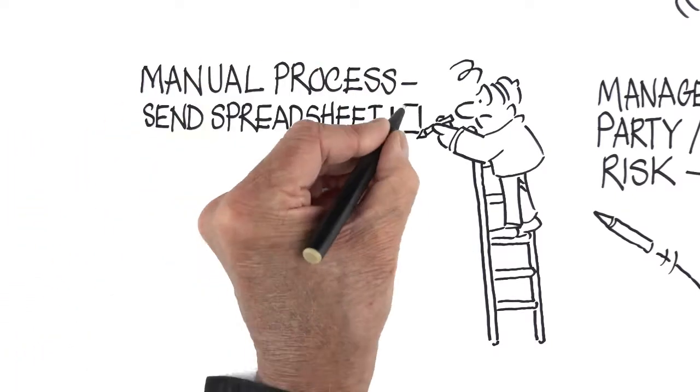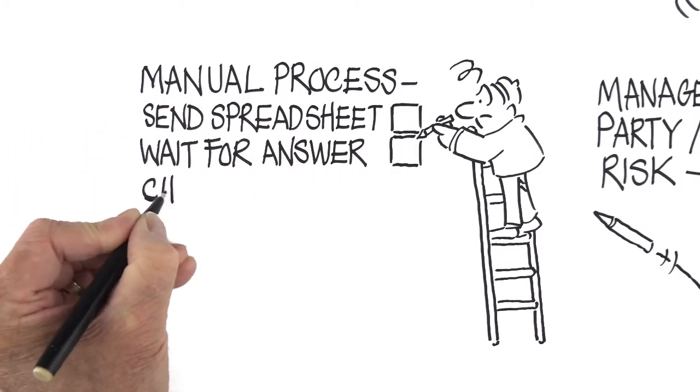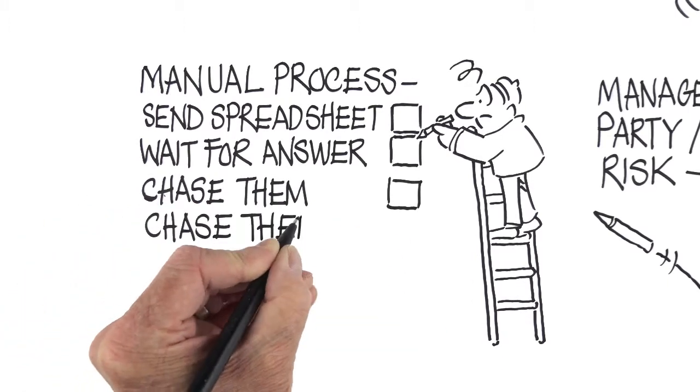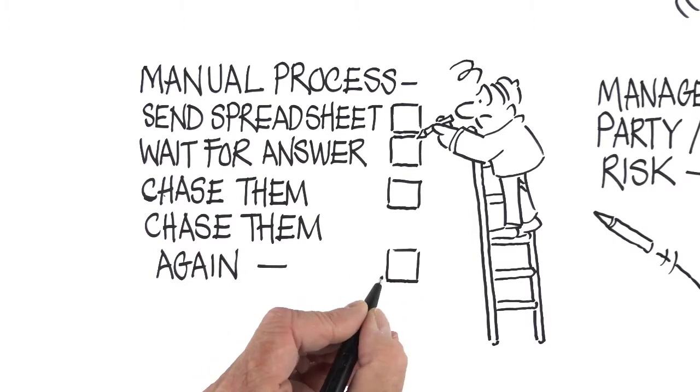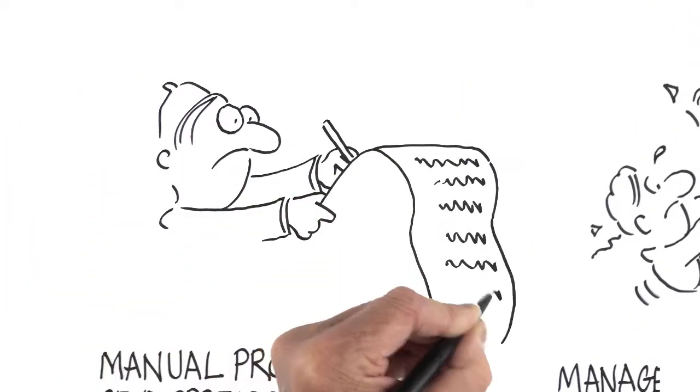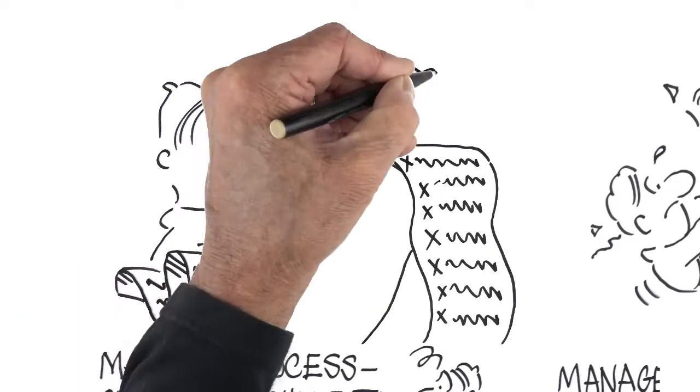Send a spreadsheet to every one of your suppliers. Chase them up, because they haven't all answered. Centralise all the hundreds of responses you eventually get. Attempt to score the results. Not working properly? Start again.